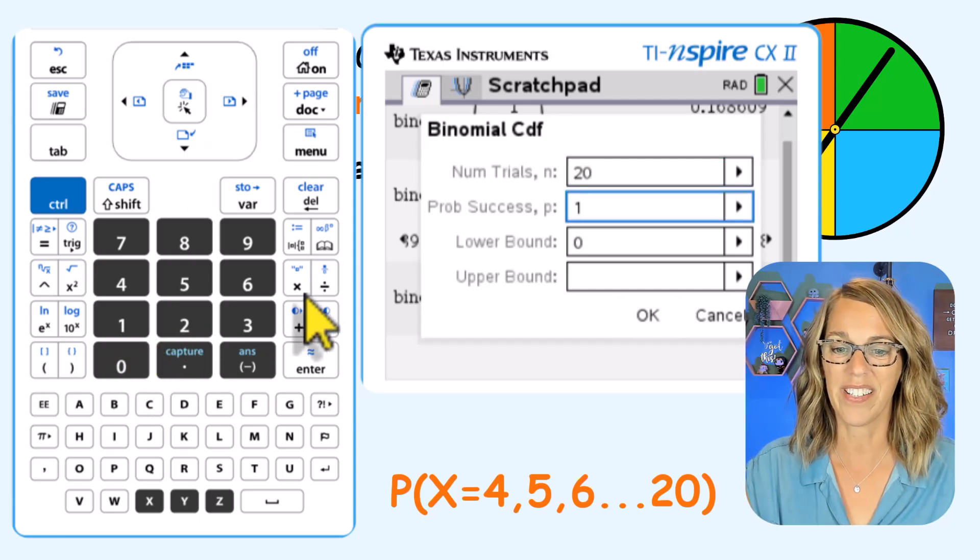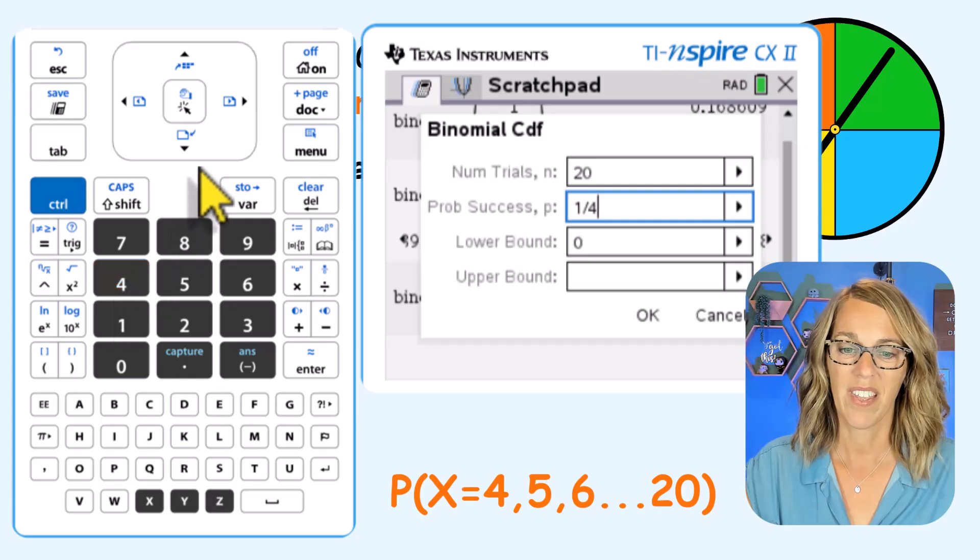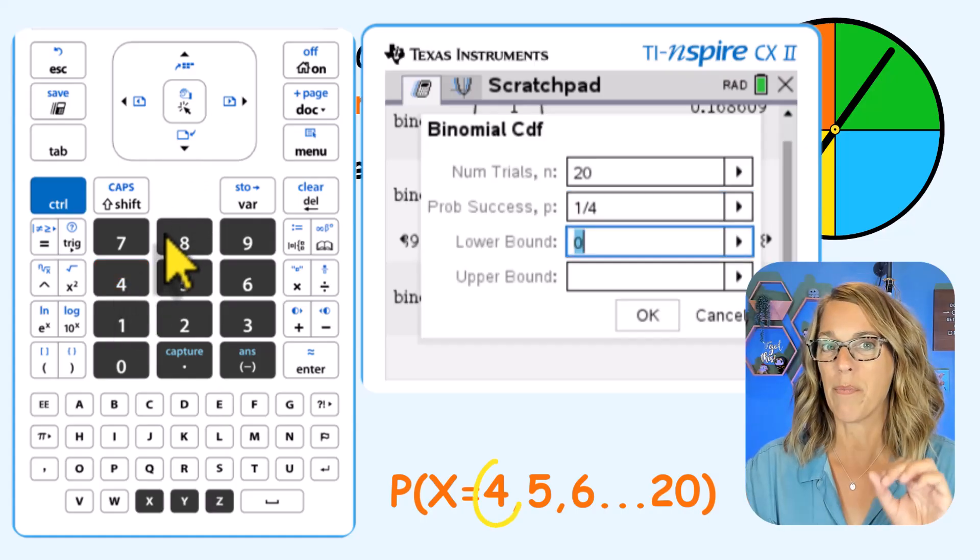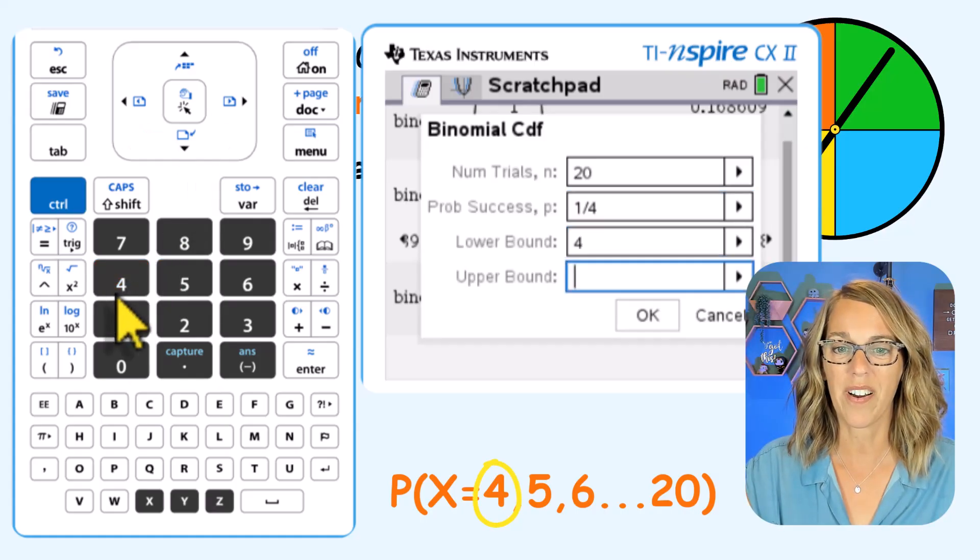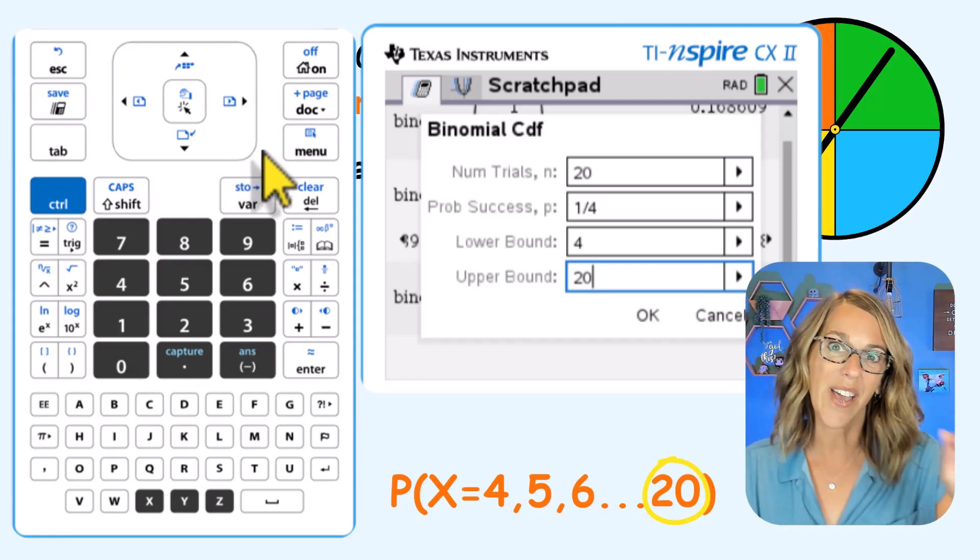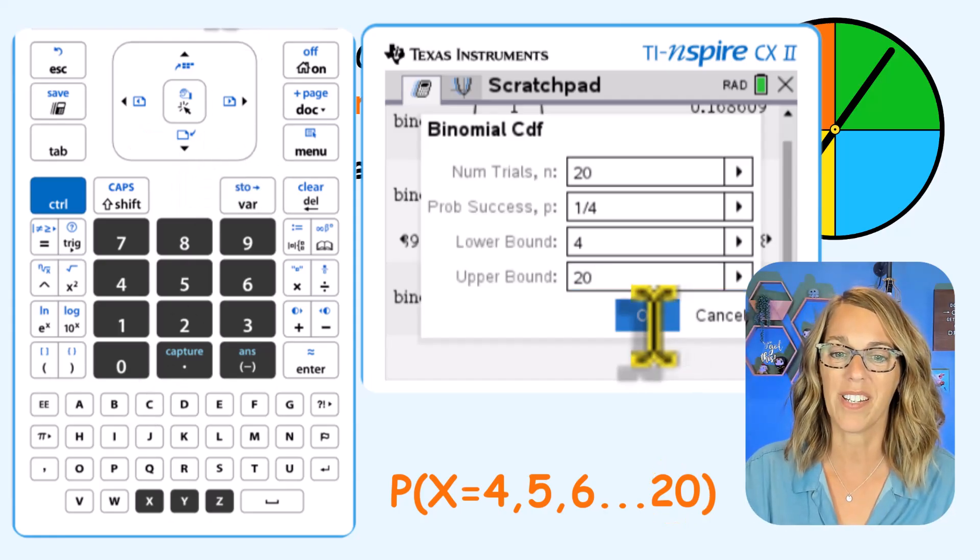Arrow down, one fourth, still the same. Arrow down, my lower bound between four and 20 is going to be four. Arrow down to 20. So it's going to add up all of those individual probabilities for me.